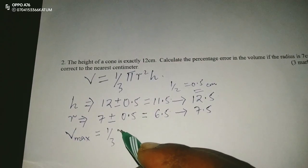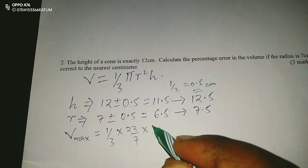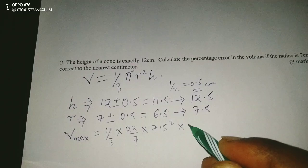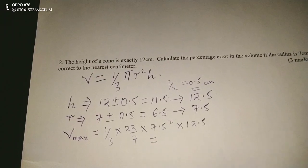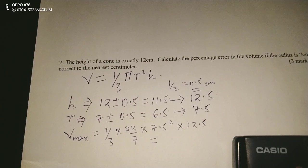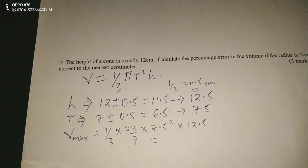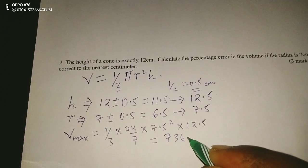The maximum volume is one-third × (22/7) × 7.5 squared × 12.5. This gives us 736.61 cubic centimeters.